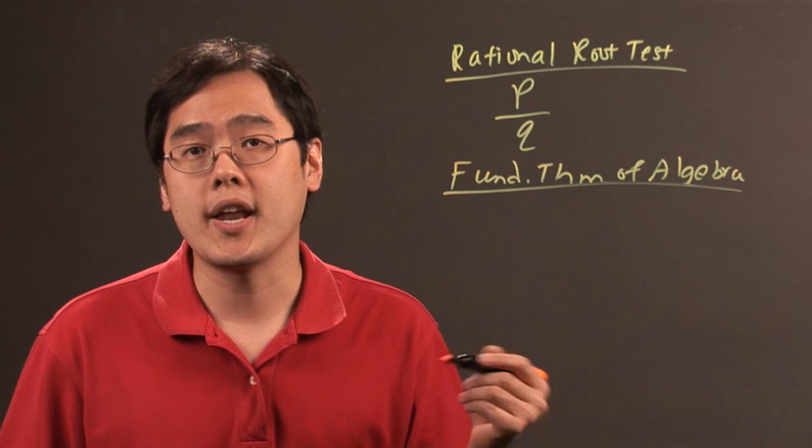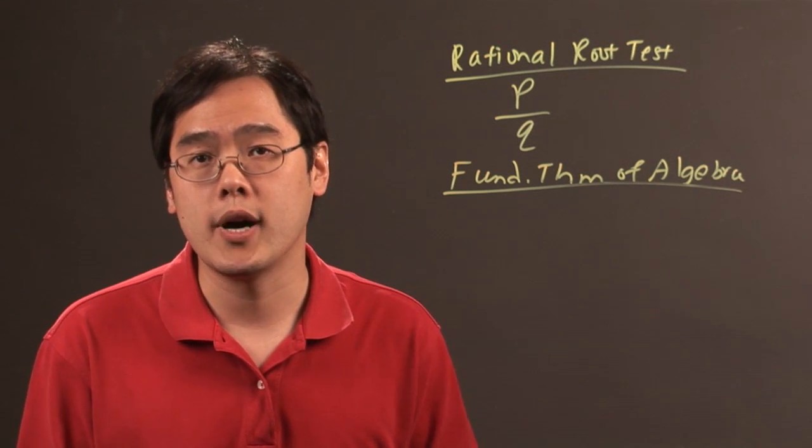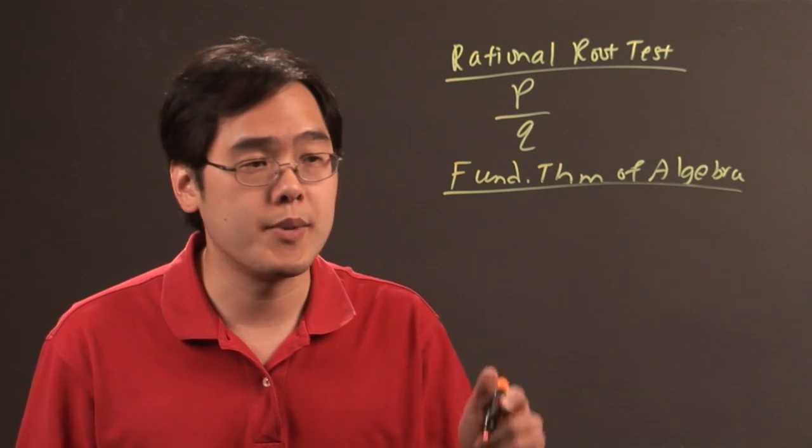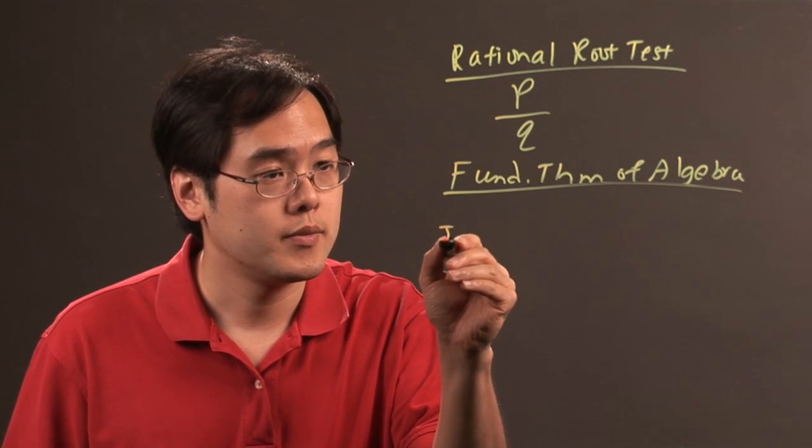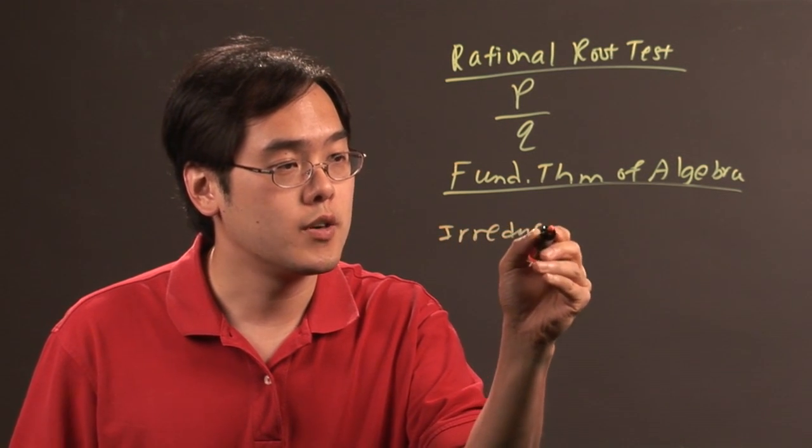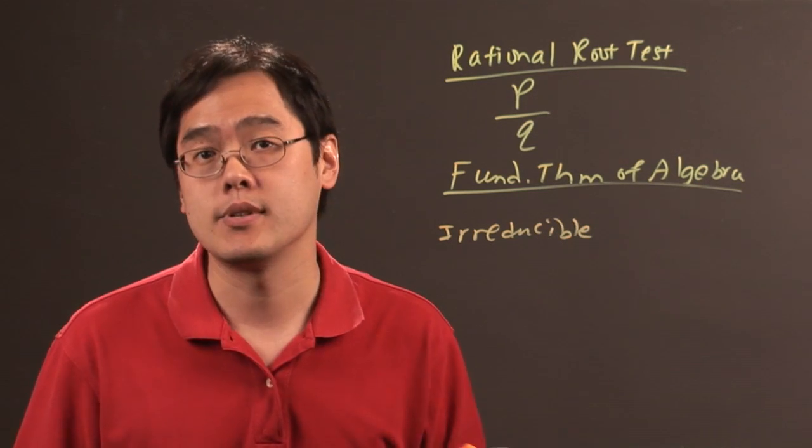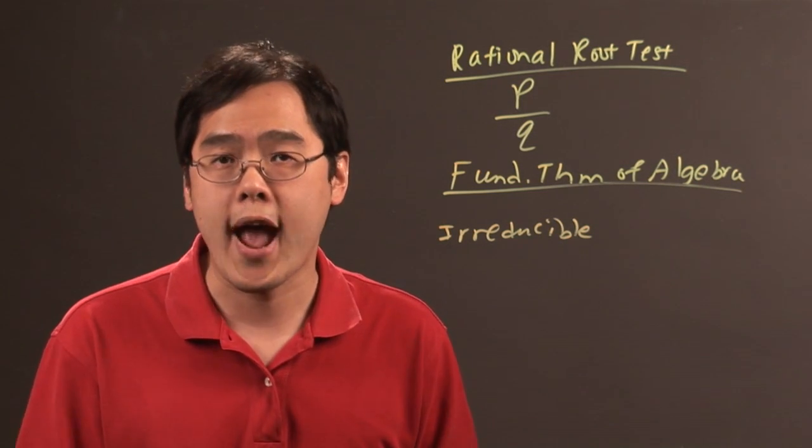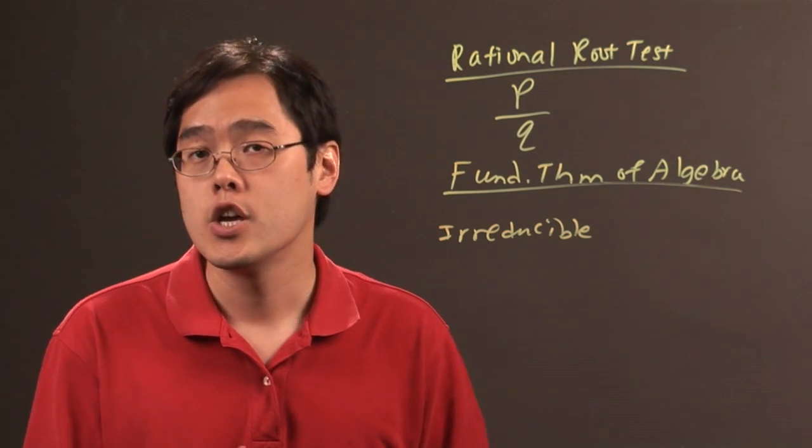Now when it comes to writing a polynomial as a product of irreducible polynomials, you want to think about what is irreducible over, because polynomials can be irreducible over anything, depends on what you're looking for. Is it irreducible over the integers, irreducible over the rationals, irreducible over the reals, so on and so forth.